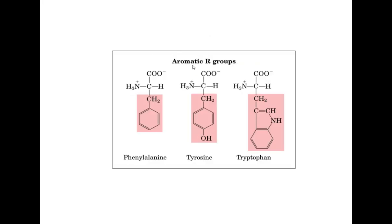And lastly, we have the aromatic R-groups. These are the amino acids that form rings in their R-groups. Here we have phenylalanine, tyrosine, and tryptophan.